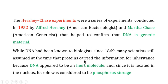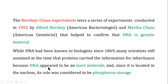Scientists were considering protein as the material for inheritance because proteins are made up of 20 different amino acids, while DNA is made up of only four nucleotides. Since there are many traits in living organisms, they thought the molecule suited for inheritance should contain more variety. Protein, with 20 amino acids, had more variety compared to DNA with four nucleotides, so protein was thought to be the inheritance molecule.